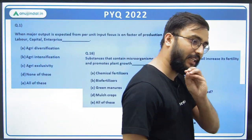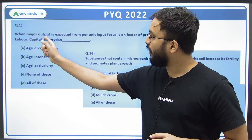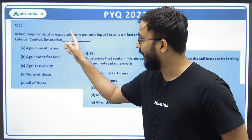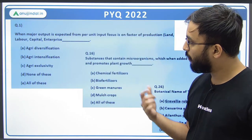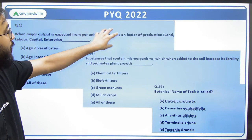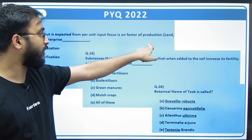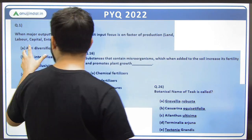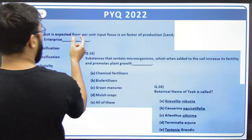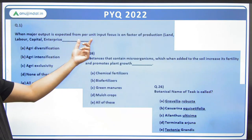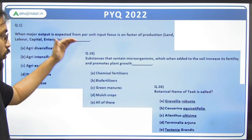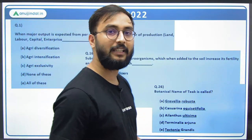When you look at previous year questions, look very carefully. First question example: 'When major output is expected from per unit input, focus is on factor of production — land, labor, capital, enterprise — what is this term called?' The answer is intensification or agri-diversification. So when output is expected to be maximum from minimum input based on factors of production, you can get the answer. These are just basic questions — it doesn't mean you need agricultural background.